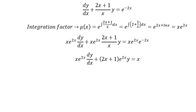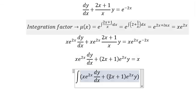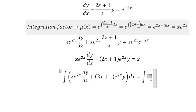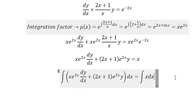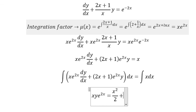Next we integrate both sides. The integration on the left gives us xy·e^(2x). The integration on the right gives us x²/2 plus C.